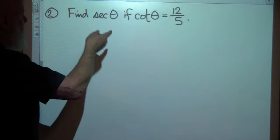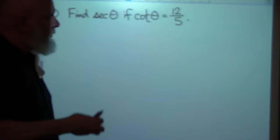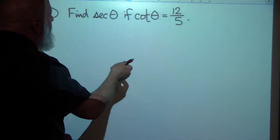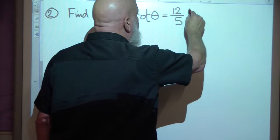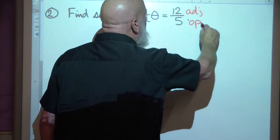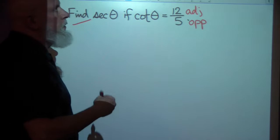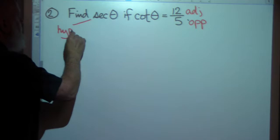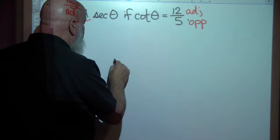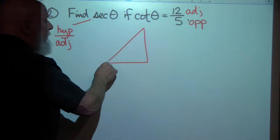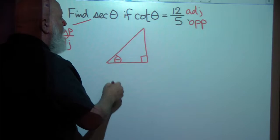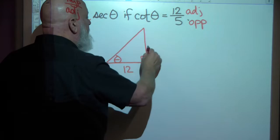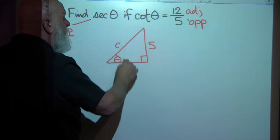Let's do another one. Looking at the same two functions — secant and cotangent. I'm going to approach it the exact same way. The cotangent is adjacent over opposite, since tangent is opposite over adjacent. And secant is the inverse of cosine — cosine is adjacent over hypotenuse, so secant is hypotenuse over adjacent. I'm going to draw a right triangle, just a rough sketch, not paying any attention to scale. I'll put my theta right here. My adjacent side is going to be 12. My opposite side is going to be 5.